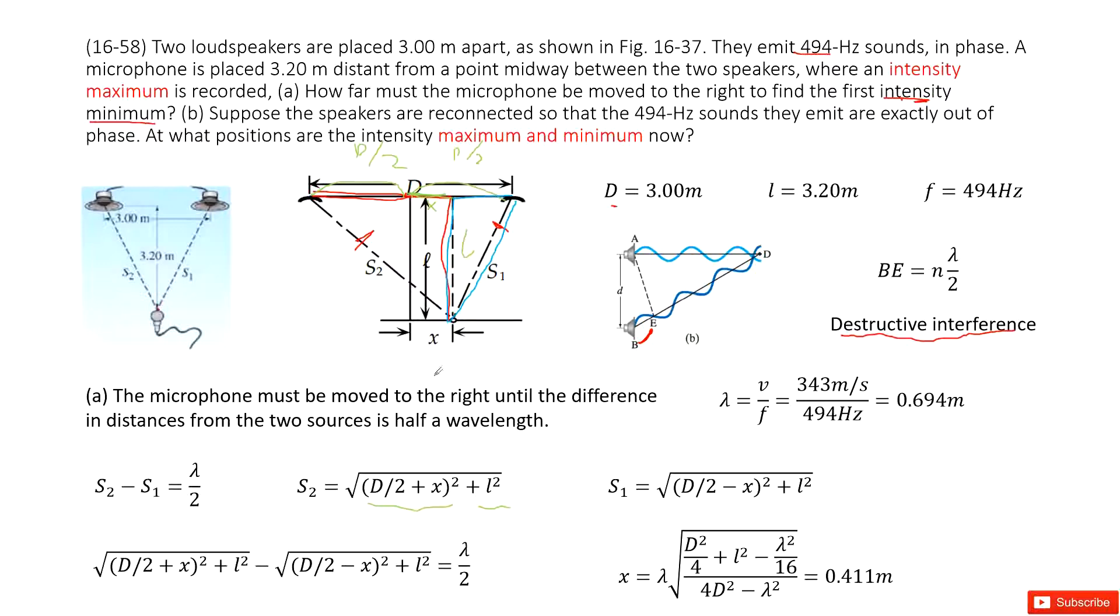And then we can see for this length, this length is D over 2 minus X. And this length L squared. So now we get S2, S1.